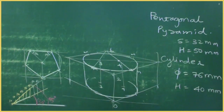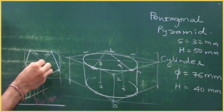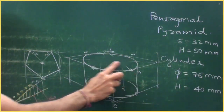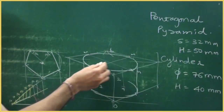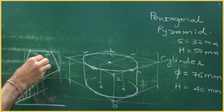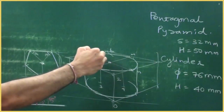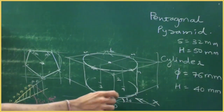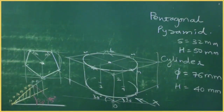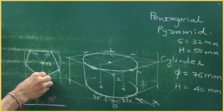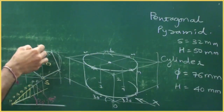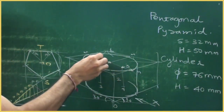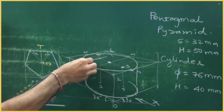Now we need to draw the pentagon for the pentagonal pyramid. First we will find the center of the ellipse — that is the center for the pentagon. One side is parallel to VP and away from observer. From center O, mark O to S and O to T on the 30-degree line. From T, draw a horizontal line parallel to this.